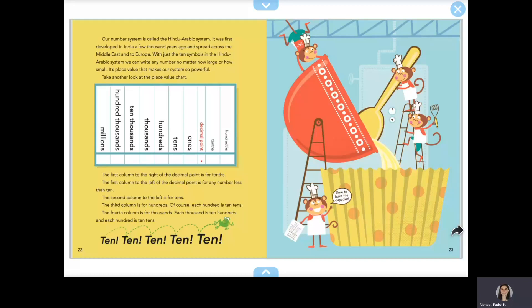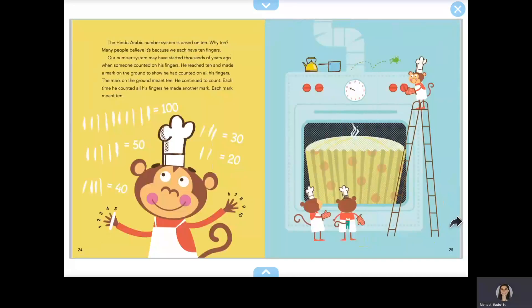The fourth column is for thousandths. Each thousand is ten hundredths and each hundred is ten tenths. Ten, ten, ten, ten, ten, ten. The Hindu-Arabic number system is based on ten.